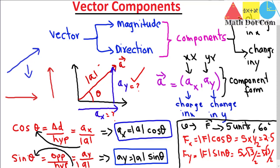By just using these formulas you can easily find the vector components. Components of vectors are the breakdown of a vector into two parts — one is the change in x and the other is the change in y. That's all from today's lecture. Thank you.